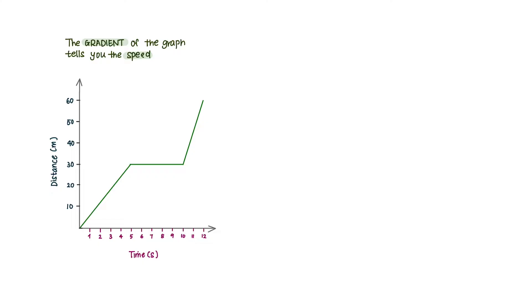A distance-time graph like this one tells you how far something traveled in a certain period of time. For instance, the graph here tells us that an object traveled 60 meters in 12 seconds. The gradient of the graph tells you the speed.